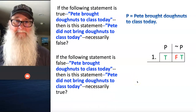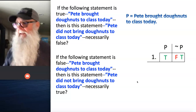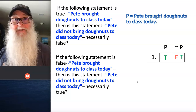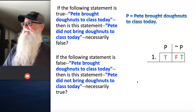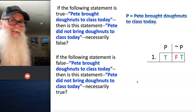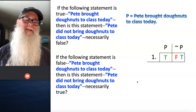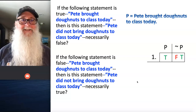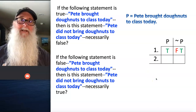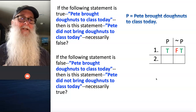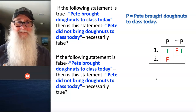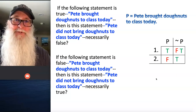For example, let's say that it's false that Pete brought donuts to class today. Pete walks through the door, he's got his empty hands in his pockets and he's whistling along, and somebody shouts out, Pete brought donuts to class today. And Pete says, no, I didn't — I didn't bring any donuts to class today. That's false. When somebody else shouts out, Pete didn't bring donuts to class today — are they saying something true? And the answer is yeah. It's false that he did, but it's true that he didn't.